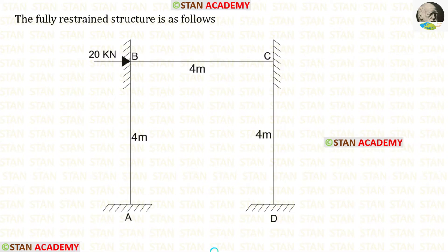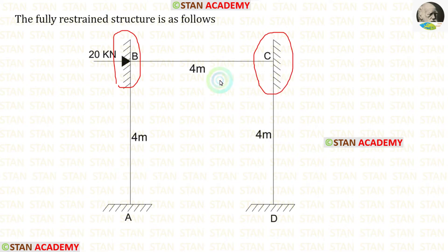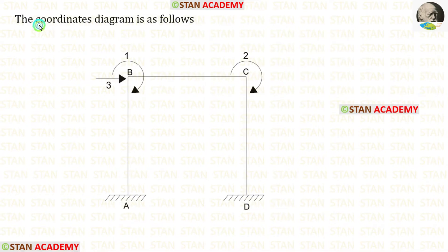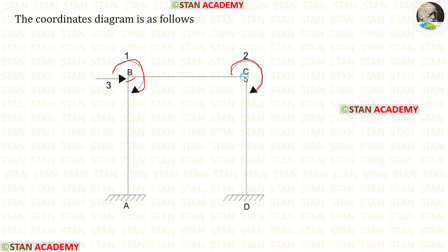Now let us make the fully restrained structure. For that, we have to apply fixed supports at points B and C. Now let us make the coordinates diagram. The first coordinate is at point B because we have slope there. The second coordinate is at point C because we have slope there too. The third coordinate is the sway. Since the sway occurs towards the right side, let us keep the coordinate towards the right side.